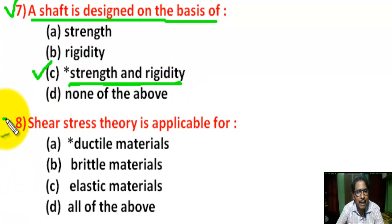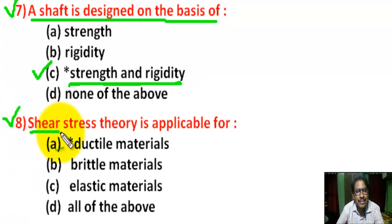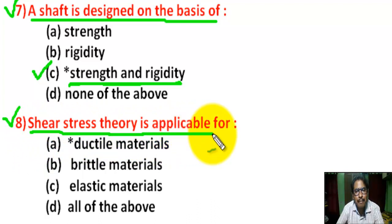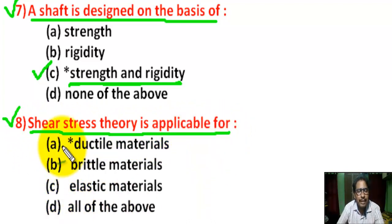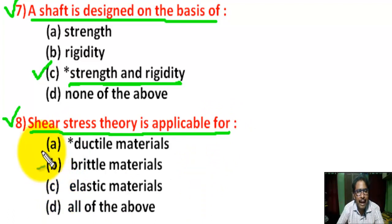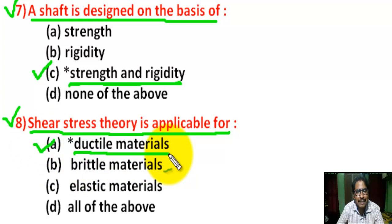Question number 8: shear stress theory is applicable for — there are 4 options. The correct answer is A: Ductile material.